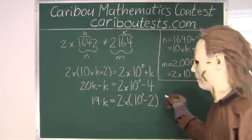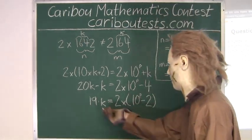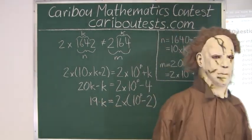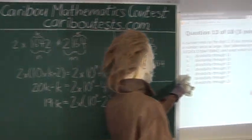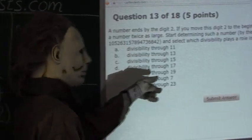So we know that the number you start off with must be divisible by 19. So the answer is e, divisibility through 19.